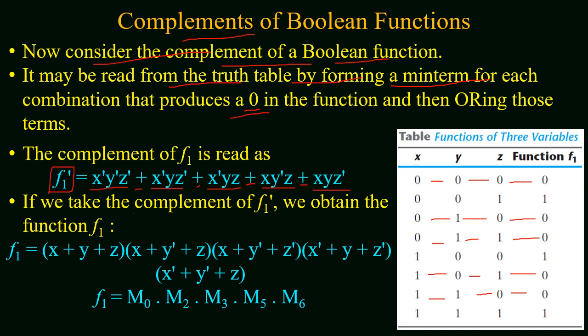Adding all these min terms forms the boolean function equal to f1'. This is because the function consists of min terms mapping all binary combinations that give a value of 0, so it equals the complement of the original function. Taking the complement of f1' gives us f1, and further solving with De Morgan's law gives the function f1 as a product of the corresponding max terms or their designations. This result matches what we obtained when we constructed the boolean function using max terms.